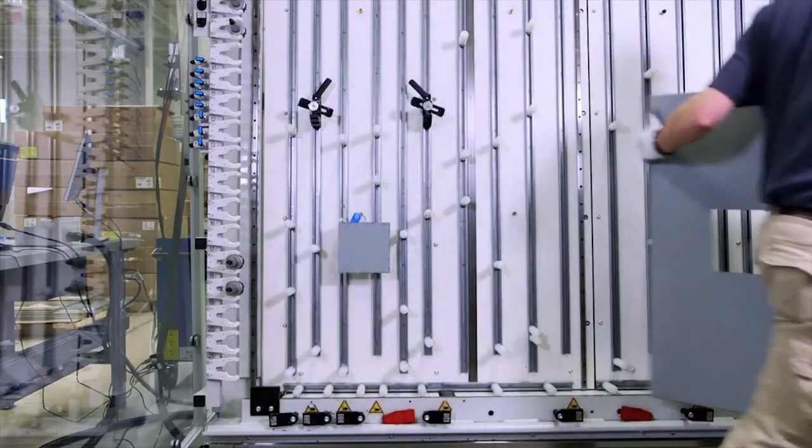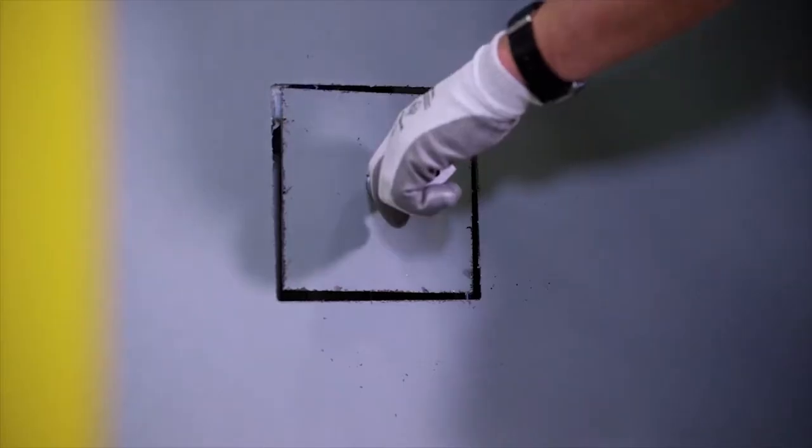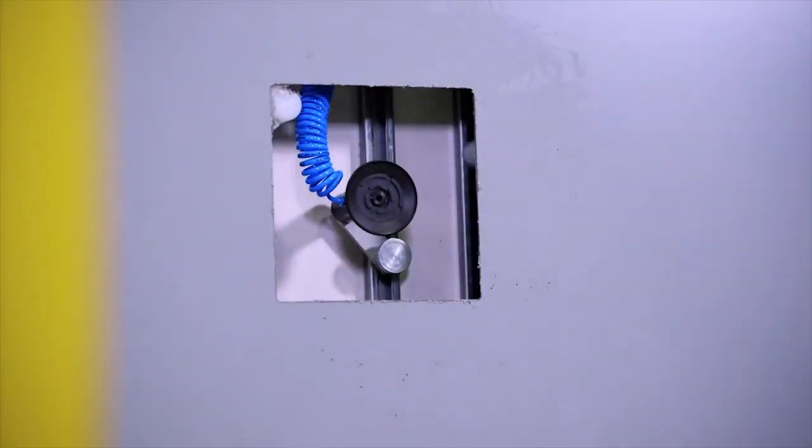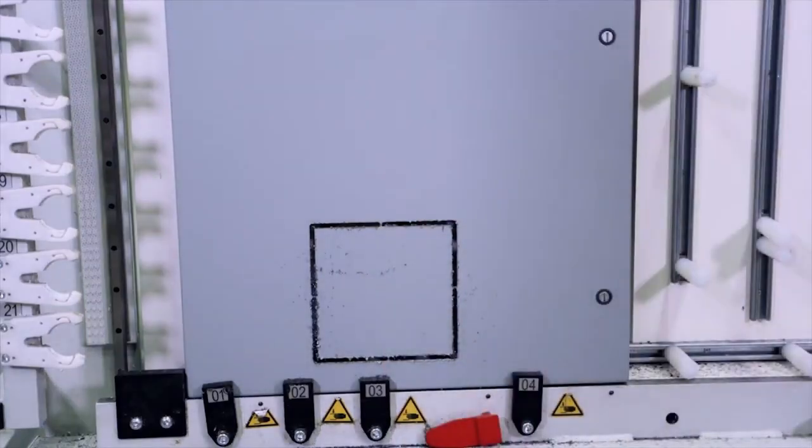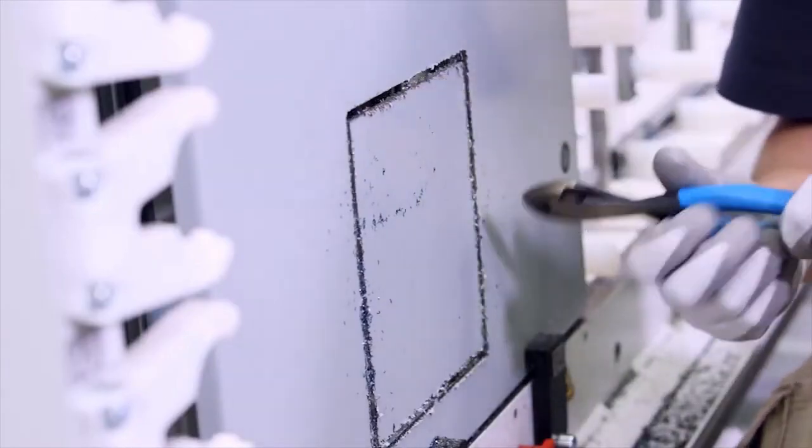The suction cups can be used to hold the piece being cut out in place. The suction cups not only prevent the cutout from falling and possibly damaging the enclosure, they also allow for faster processing by eliminating the need for tabs.